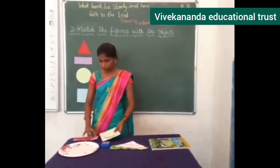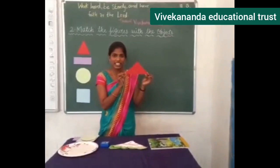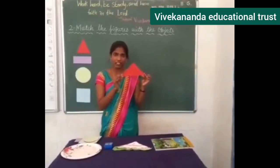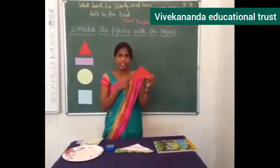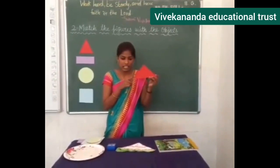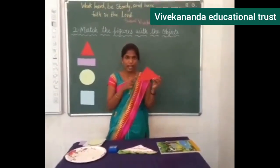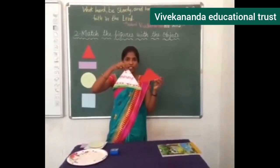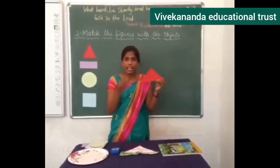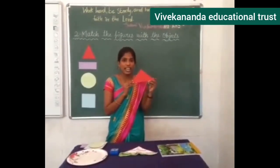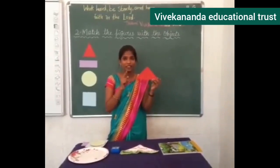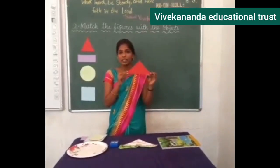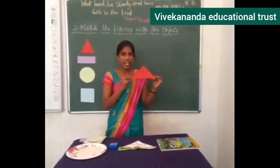Next, what shape is this? Triangle. Which of the objects will match to the triangle? Observe and tell me. This folded kerchief will match to the triangle. And one more edible item is in triangle shape — you all like to eat it. Samosa is also in triangle shape.